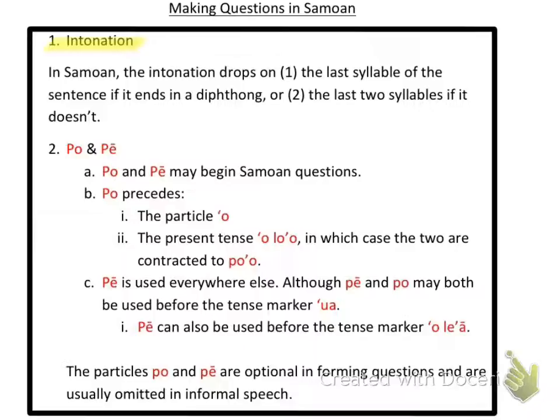That is the main way you make a question in Samoan — you lower your intonation either on the last syllable with a diphthong, or the last two syllables if it doesn't have a diphthong. The second way, used in more formal speech and written formats of Samoan, is using 'po' and 'pe'.